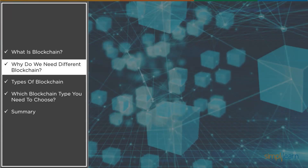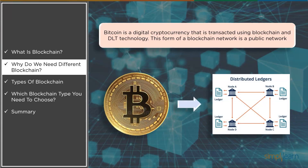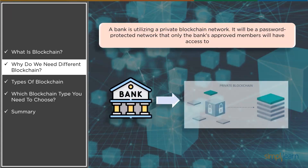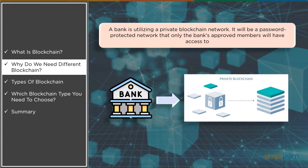Now let's understand why we need different types of blockchain. The most basic requirement of a blockchain is to conduct transactions or data exchanges across a secure network. However, how people use blockchain and distributed ledger technologies varies from one generation to the next. For example, Bitcoin is a digital cryptocurrency transacted using blockchain — because anyone from anywhere in the world can become a node, verify other nodes, and exchange bitcoins, this is a public network. On the other hand, a bank utilizing a private blockchain network would have a password-protected network that only the bank's approved members can access, so no one outside has access to bank information. Based on usage and requirements, the blockchain network can be set up in a variety of ways.